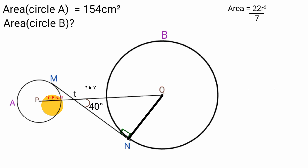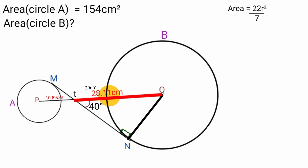So if line PT is 10.89 cm, then line QT must be equal to 39 cm minus 10.89 cm, which equals 28.11 cm. So we have found the length of line QT to be 28.11 cm.